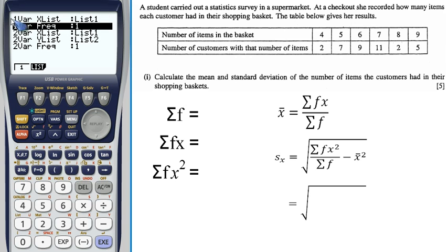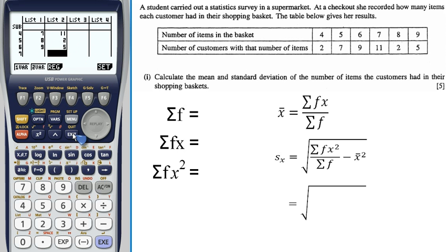Now, at the moment, the calculator is set up for all the frequencies being 1. So, it's set up for just one list of data. So, I need to change that so that it looks into list 2 and reads out the frequencies. So, list 1 will be my x values and list 2 will be my frequencies. Okay, that's done. So, I can exit that and then I'm going to select one variable calculations.